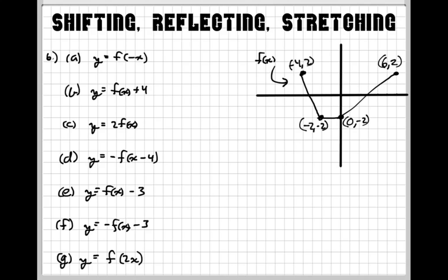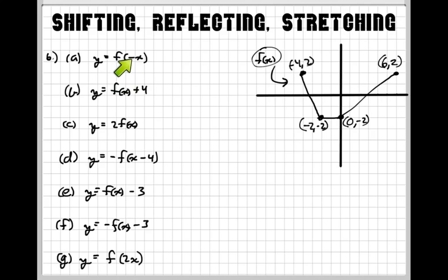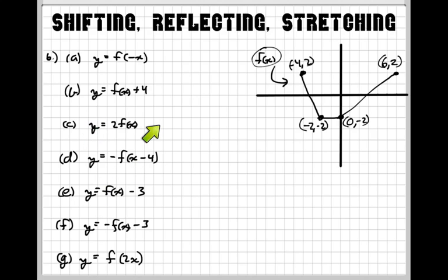The normal function would be f of x. Each of these new functions that these problems are having you create a graph for are going to take this function and make a change to it. This one has a negative on the x. This one has a plus 4 on the y — it's adding 4 to the function. This one is multiplying to the function, and there's a minus 4 in there.